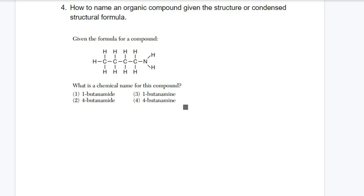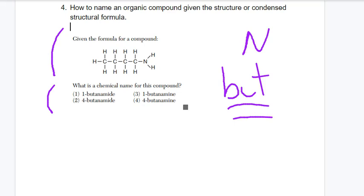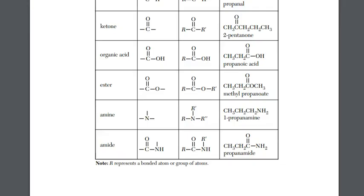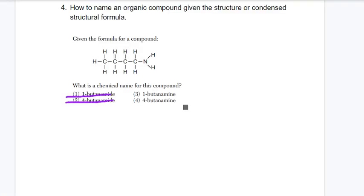Naming an organic compound when you're given the structure. Here's an example from the Regents. You're given this formula, and you're asked to name it. First of all, if you take a look, you have nitrogen, which is more than just carbons and hydrogens. So you're going to go to reference table R. And if you count up the number of carbons, you have 1, 2, 3, 4. So you know it's going to be but, which is the prefix. But are we dealing with an amine or are we dealing with an amide?